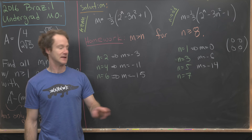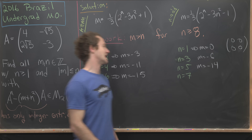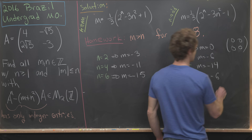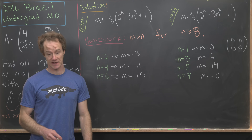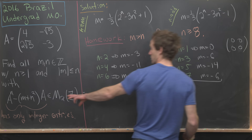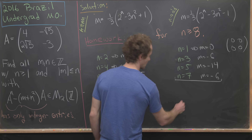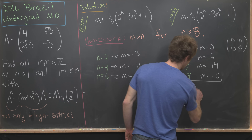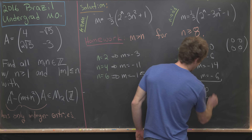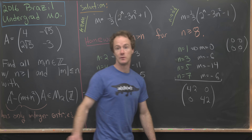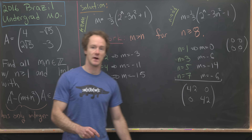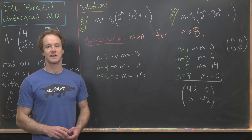For n = 3: m = −6 (fails |m| ≤ n); n = 5: m = −14 (fails). Finally, n = 7 gives m = −6, and since |−6| ≤ 7, this satisfies the constraint. Plugging in, we get the diagonal matrix [42, 0; 0, 42], which has integer entries. So (n=7, m=−6) is a solution, and that's a good place to stop.